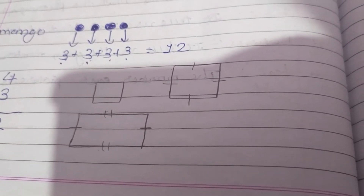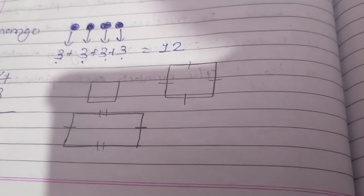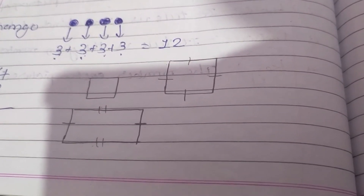आपको easily identify करना होगा कि इसके अंदर कितने square हैं। The question is: count the number of squares in each of the following and write it in the box. In question number one, generally हमें यहाँ पे first big one — यह हमें first square दिख रहा है।